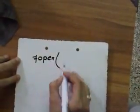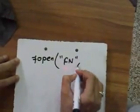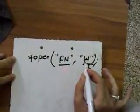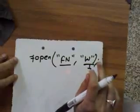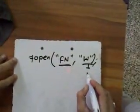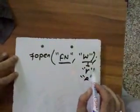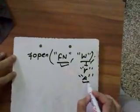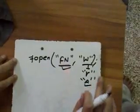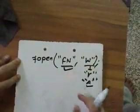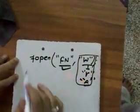The C language gives us a function fopen. It takes two parameters: file name and mode. Mode specifies how the file is opened. Write mode means we write data to the file. Read mode means we read data from the file. Append mode means we open the file and add data to it. We will discuss more modes later.